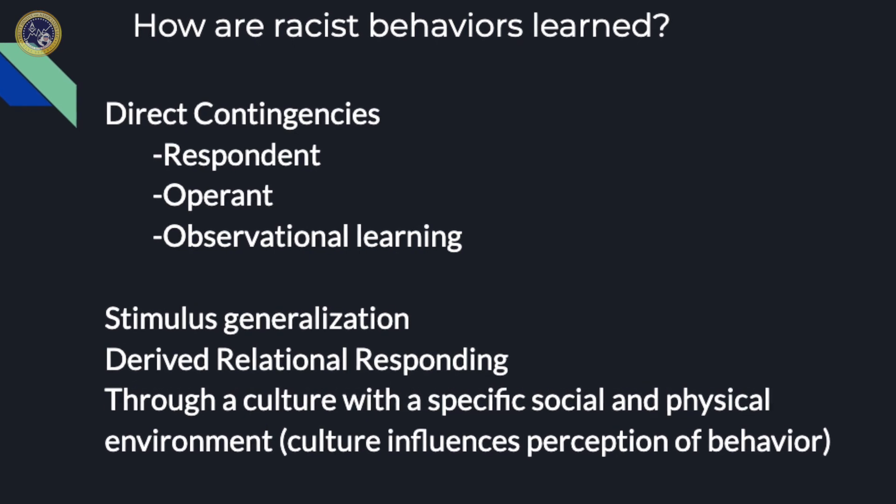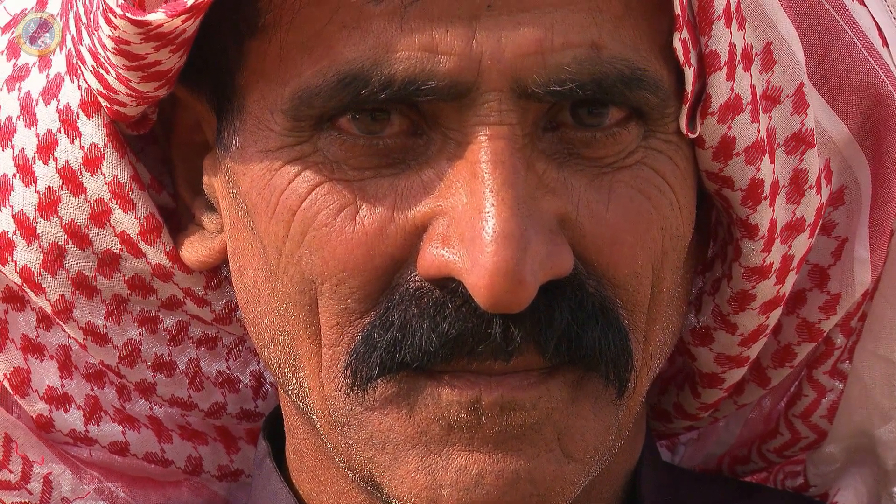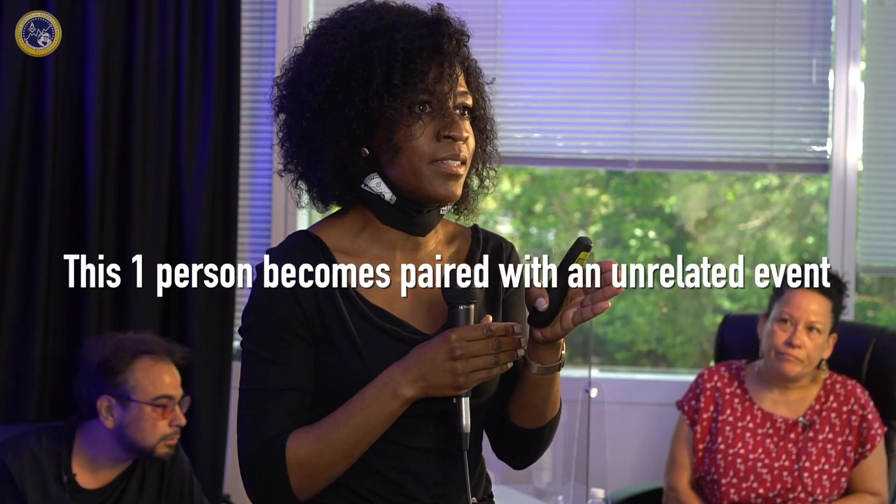Respondent conditioning is more complex. There is a supposedly neutral stimulus — someone of Middle Eastern descent, for example — that should be neutral; it's just where they were born. But when they're paired with a conditioned stimulus like a crime, it elicits an unconditioned response: fear. Now that one person is associated with one act of violence, and suddenly you make the assumption that everyone from the Middle East will elicit that same fear response.